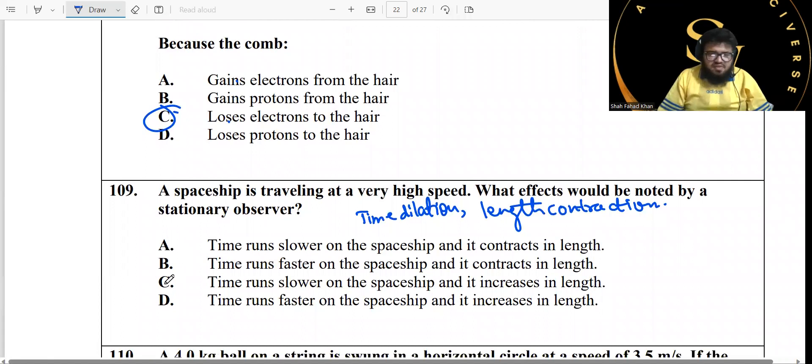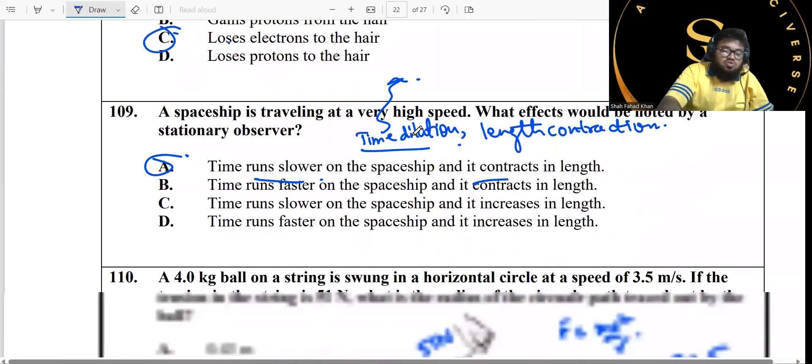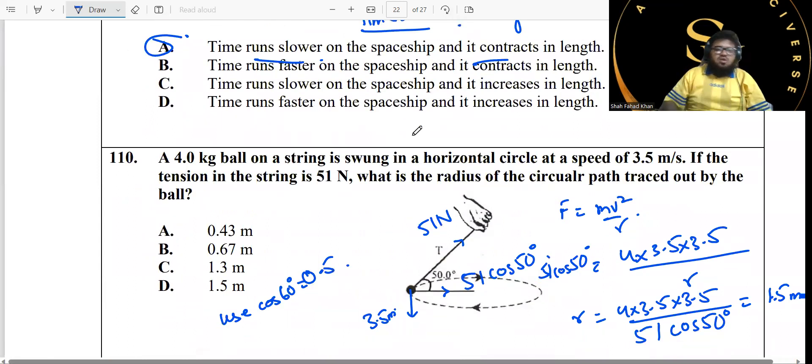A spaceship traveling at a very high speed. What effect would be noted by the stationary observer? Time dilation and length contraction, special theory of relativity. The time dilation means time is going to run slower. And length contraction is correct. Time slows down.